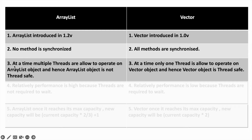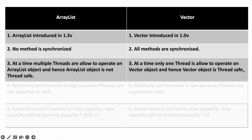ArrayList is not synchronized, so at a time multiple threads are allowed to operate on ArrayList objects, and hence ArrayList objects are not thread safe. That means if multiple threads are working on the same object, one thread may be changing the value while another thread may be retrieving the data. In contrast, Vector class is synchronized, so at a time only one thread is allowed to operate on a Vector object, and hence Vector object is thread safe. Once a thread finishes its execution, then only another thread can access it.